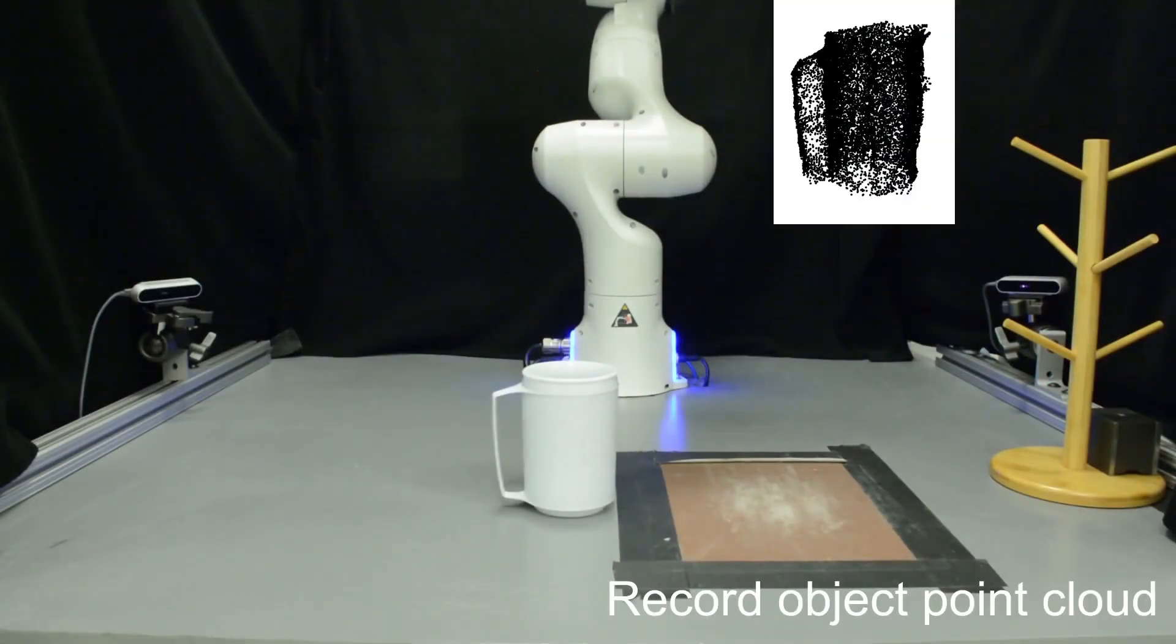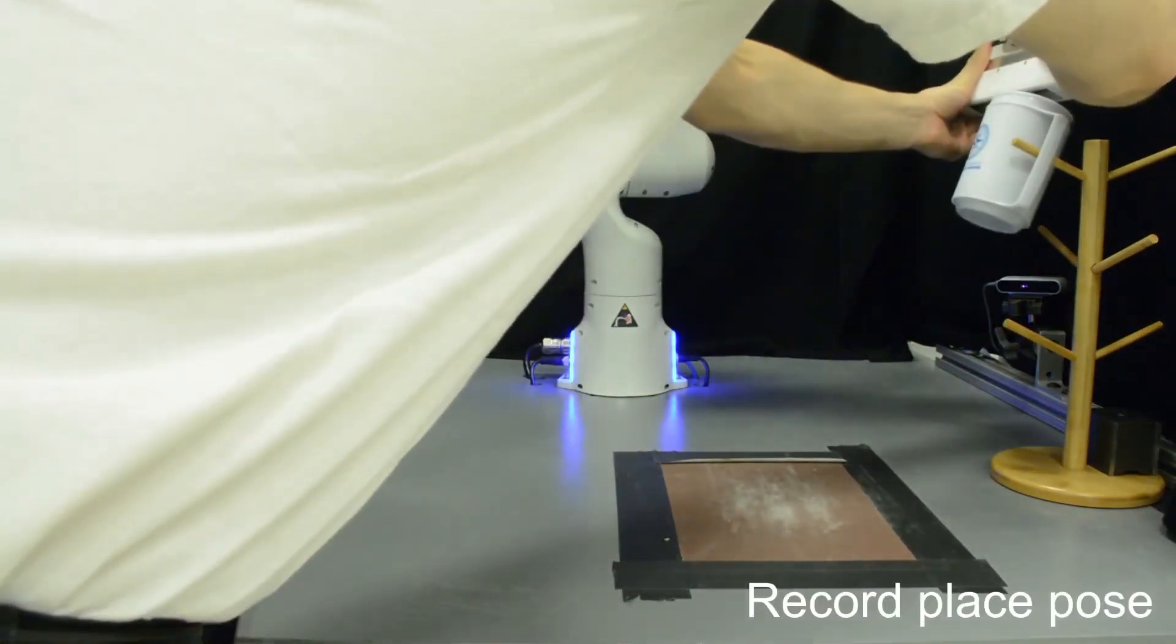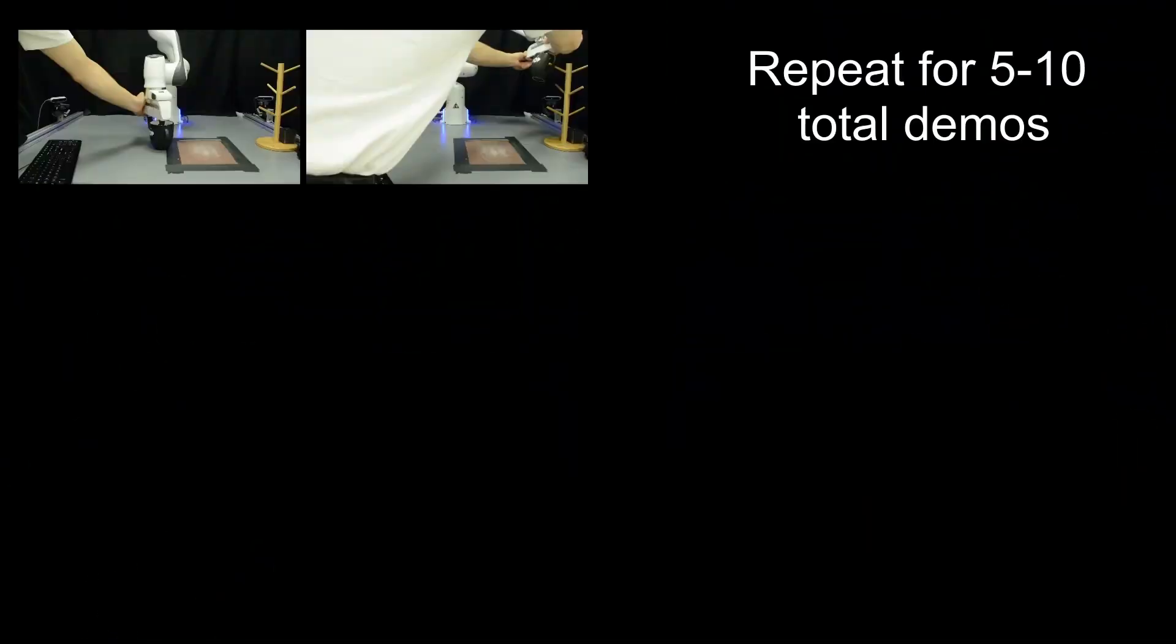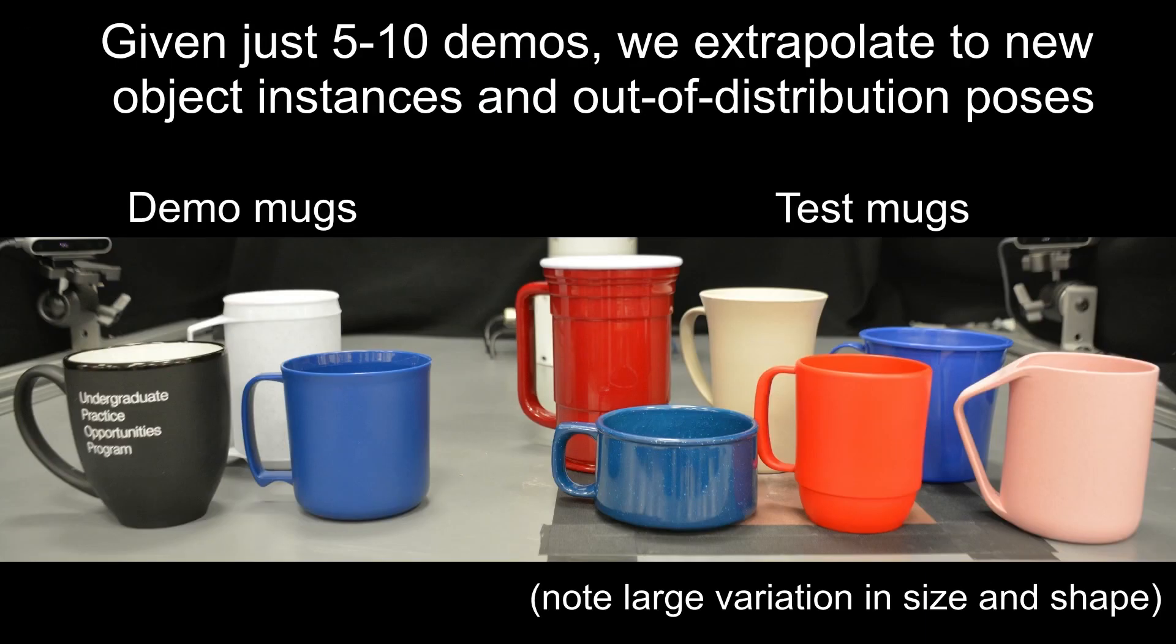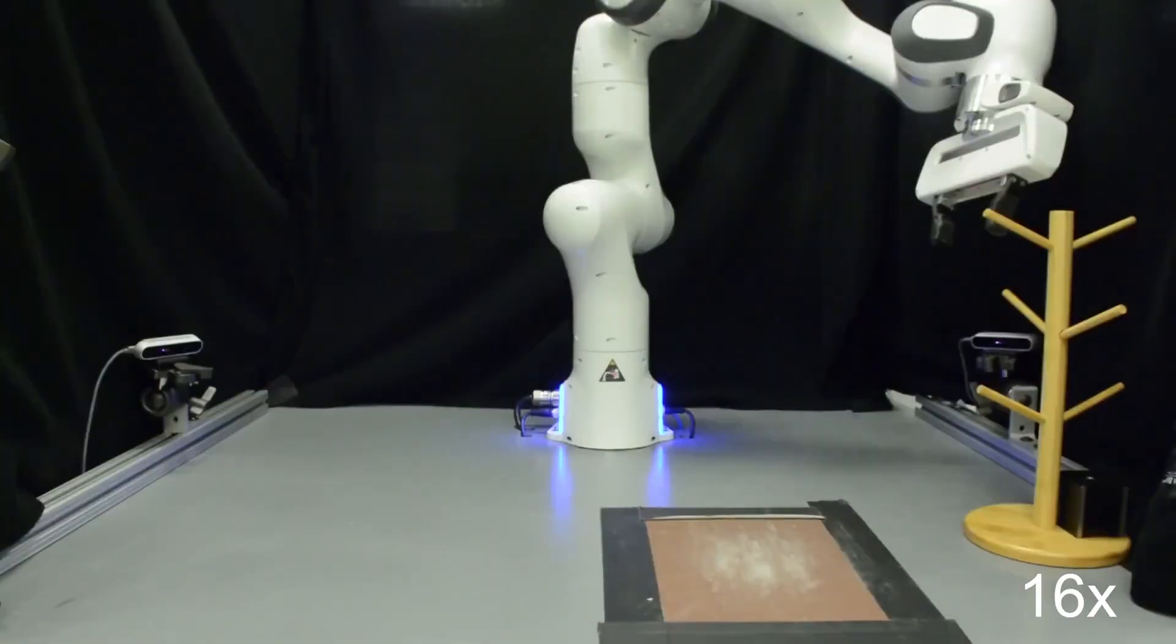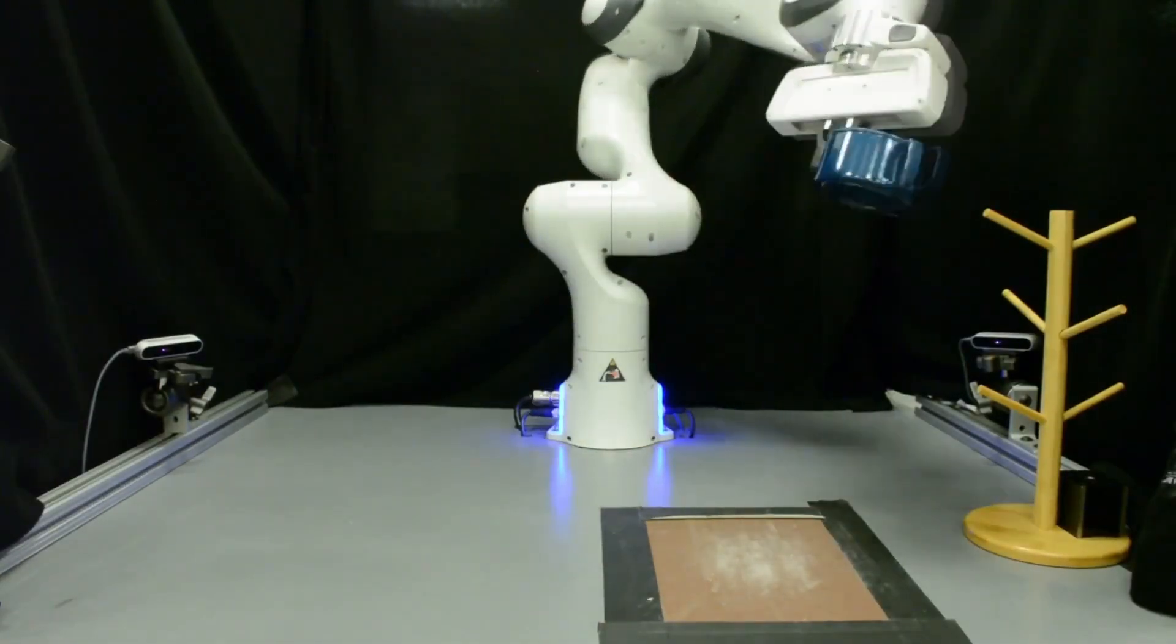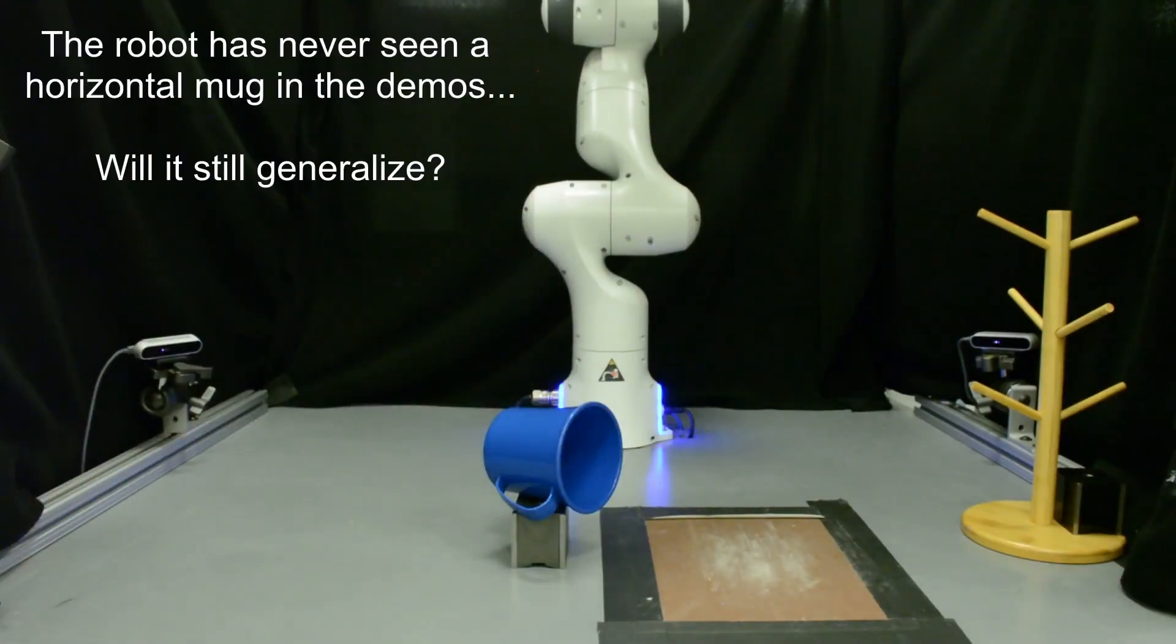Here we show the robotic manipulation capabilities enabled by our method in the real world. Object point clouds are obtained from depth cameras at the corners of the table, and the gripper pose is recorded in grasping and placing configurations. After collecting demos, we leverage our descriptor field energy optimization to recover grasping and placing poses on a set of unseen mugs with different shapes and sizes. Due to the equivariance of our descriptors, the robot can execute the task on a mug placed in the sideways pose that was never seen in the demonstrations.